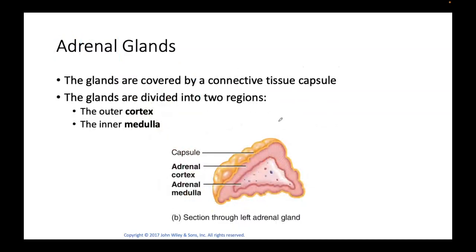When we look at the adrenals and cut it open, we'll see that we have two sections to it. We have an adrenal cortex and an adrenal medulla. Cortex means bark — the bark of a tree — so it's the outermost layer, and the adrenal medulla is the innermost layer.